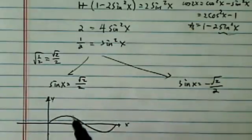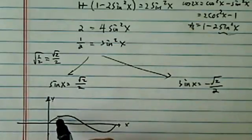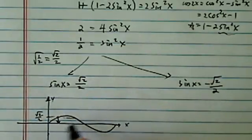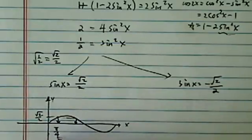I'm just drawing one period over here. This is y, this is x. Radical 2 over 2 is roughly 0.7. There's two angles here.